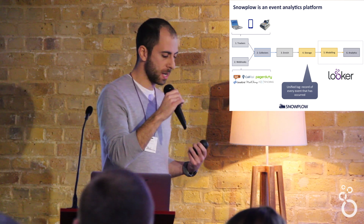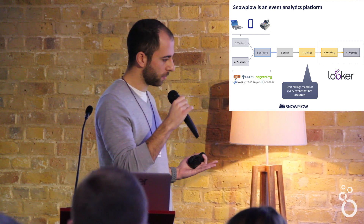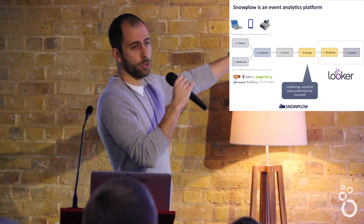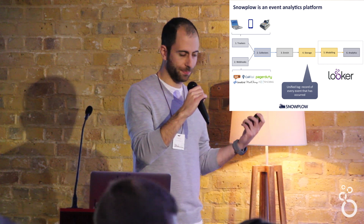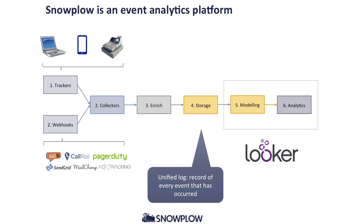What Snowplow ends up being is a data pipeline, and for some of our users, billions of events a day are being pumped down this pipeline. Data is generated either in trackers — JavaScript trackers similar to Google Analytics or Adobe Analytics — but also mobile trackers: iOS, Android, server-side trackers. Recently we launched the capability to stream event data from third-party systems that support webhooks. So you can stream data in from your instant messaging app if you're using OLARC, from your call center via CallRail, from your email marketing system via SendGrid or MailChimp, or from your advertising service provider.